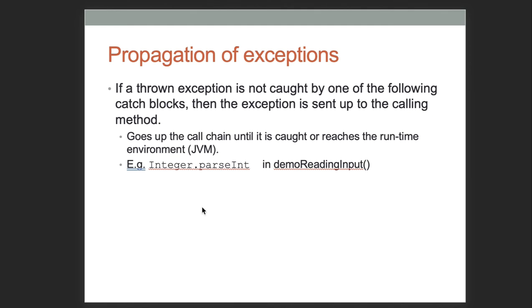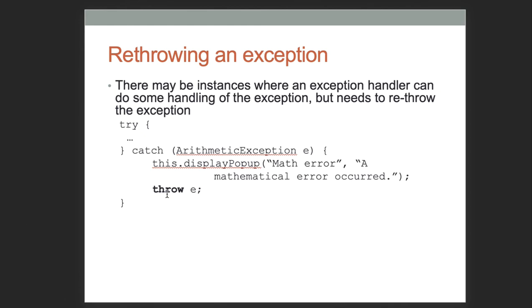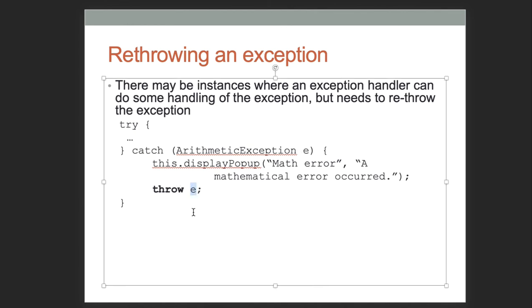How do we propagate exceptions? If we don't catch it with a catch block, we pass it on up — propagate it to whoever called us. Some exceptions may be thrown by the JVM; if not caught, they're thrown to the calling method. We can also throw exceptions ourselves as programmers using the 'throw' keyword. One thing we may want to do is catch an exception and then re-throw it to pass it on up to the caller. We throw an exception object — we've seen this before with 'throw new IllegalArgumentException'.